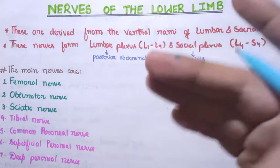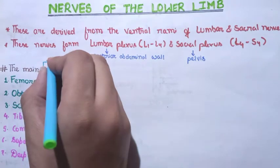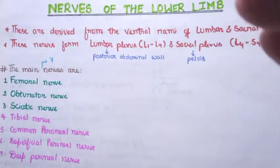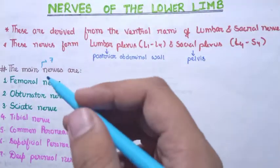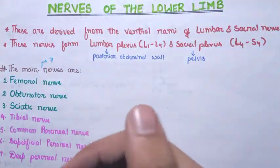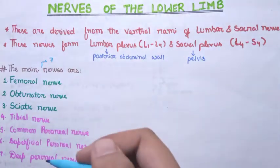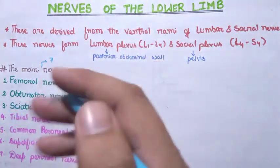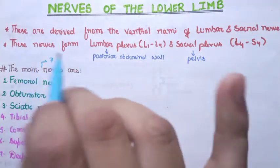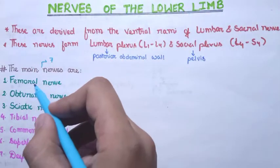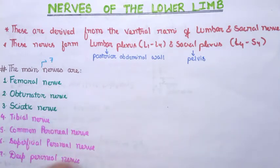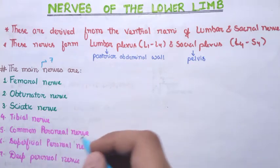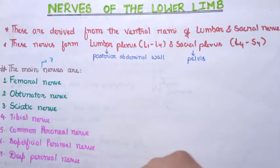Now let's see what the main nerves of the lower limb are. In total there are seven main nerves that we have to study in detail. Out of these, the three most important are the femoral nerve, the obturator nerve, and the sciatic nerve. The remaining four nerves are actually derivatives or branches of the sciatic nerve. The sciatic nerve has two parts: the tibial nerve and the common peroneal nerve. The common peroneal nerve again divides into the superficial peroneal nerve and the deep peroneal nerve.